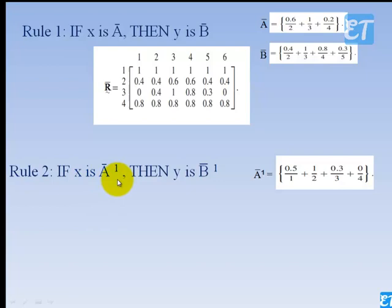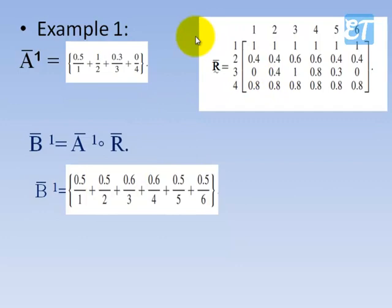A1 is given, so we need to find B1. We find it by using the composition operation: A1 composition R. A1 is here and R is here. We are going to find B1 by max-min composition.